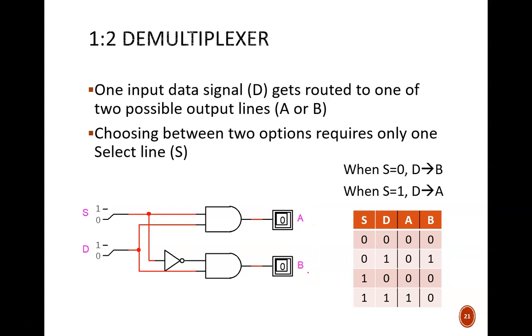Just like the MUX, a select switch, S, is needed to choose the output line. When S equals 0, output B is selected, so D is sent to line B. When S equals 1, output A is selected.